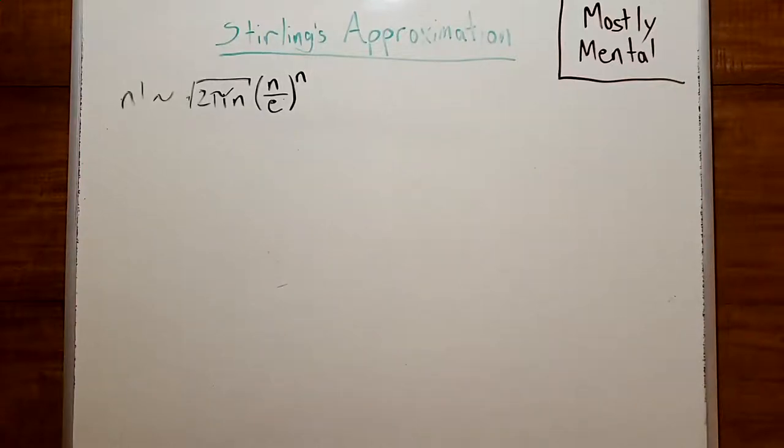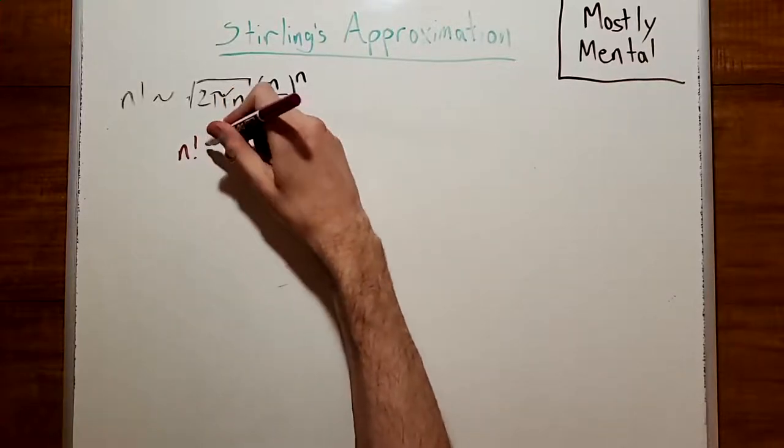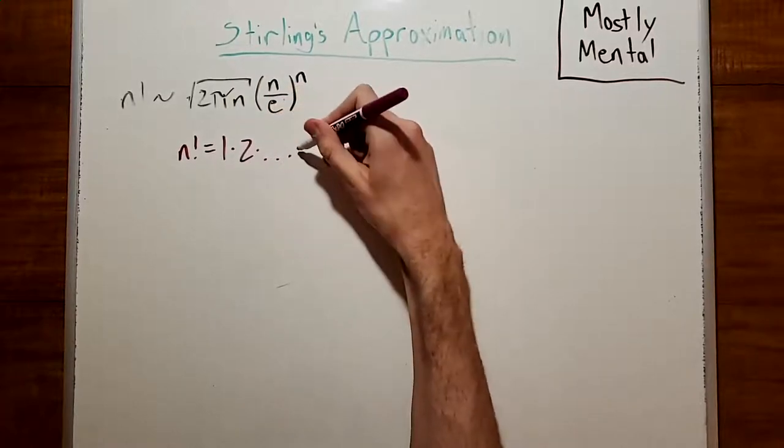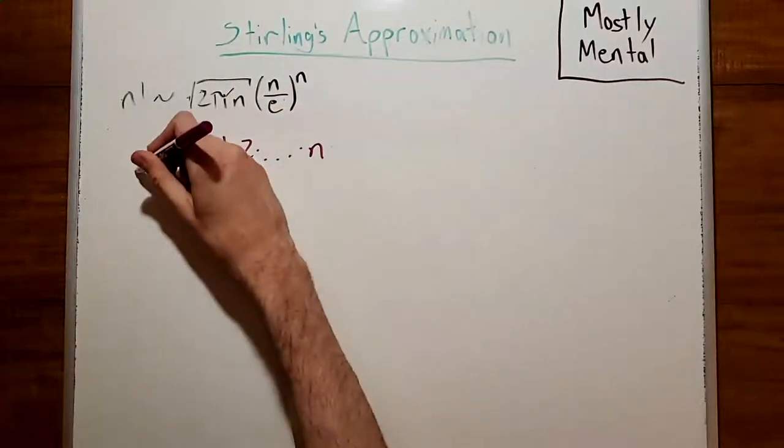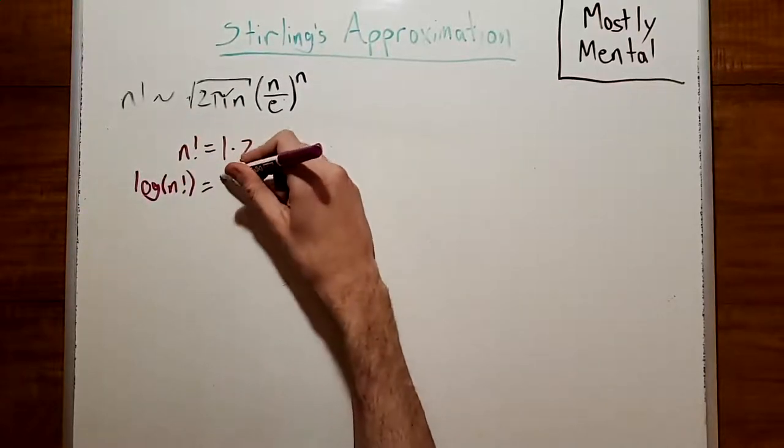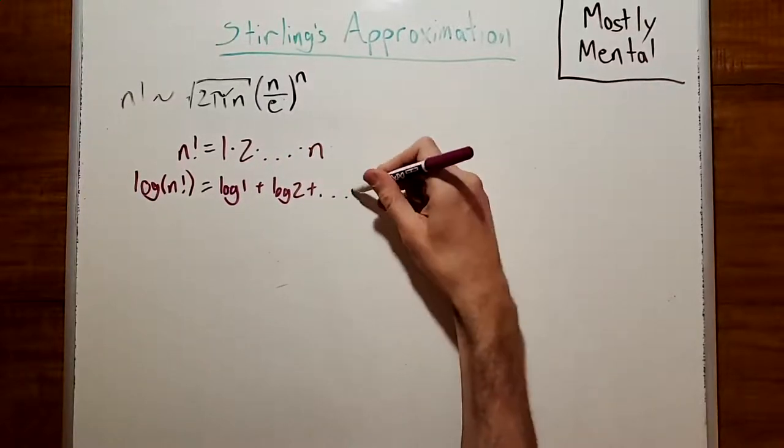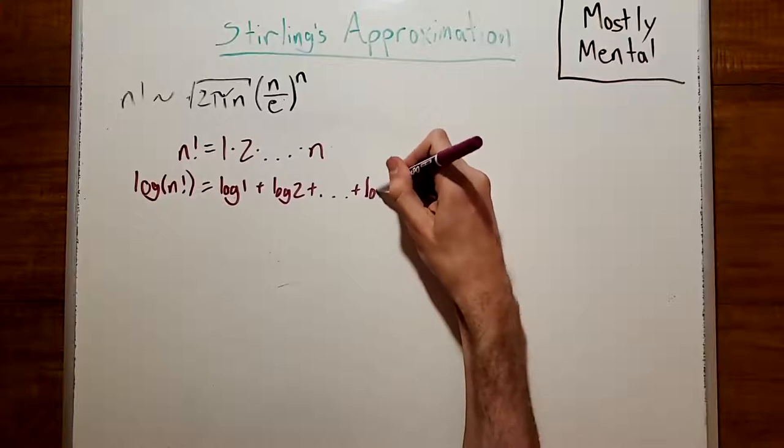That was a good start, but we can do better. We're trying to approximate a product n factorial. But products can be a bit tricky to nail down. It's much easier to work with sums instead. Fortunately, there's a nice tool for turning a product into a sum, the logarithm. Once again, n factorial is 1 times 2 and so on up to n. So, log of n factorial is going to be log of 1 plus log of 2 plus so on and so forth up to log of n.